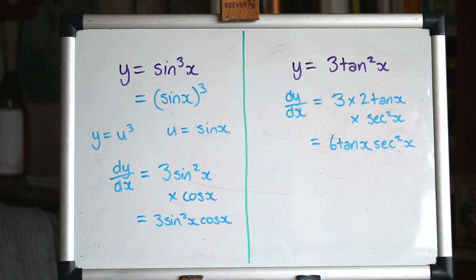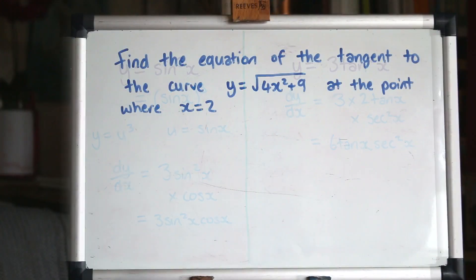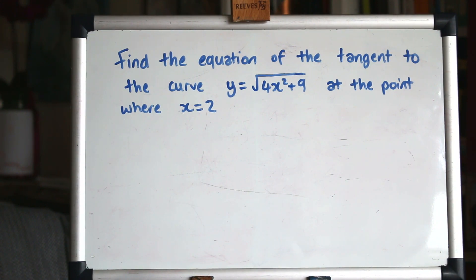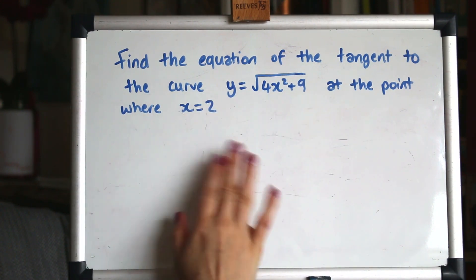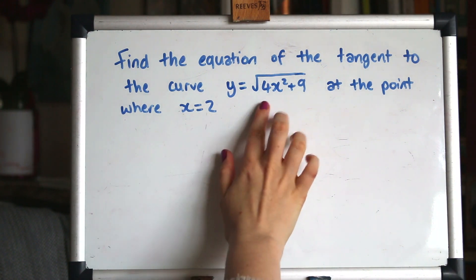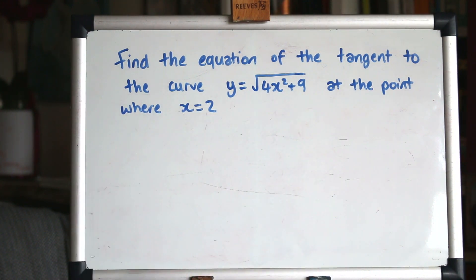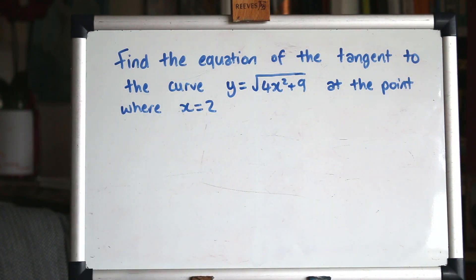That's it — keep practising those, do lots of different examples. Let's finish with an exam style question. This question says: find the equation of the tangent to the curve y equals [the given expression] at the point where x equals 2. To get the equation of a tangent we need two pieces of information: a set of coordinates and the gradient.